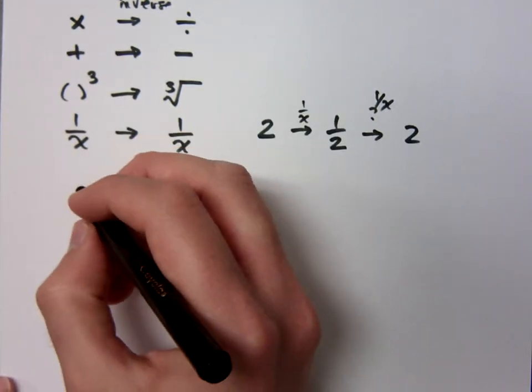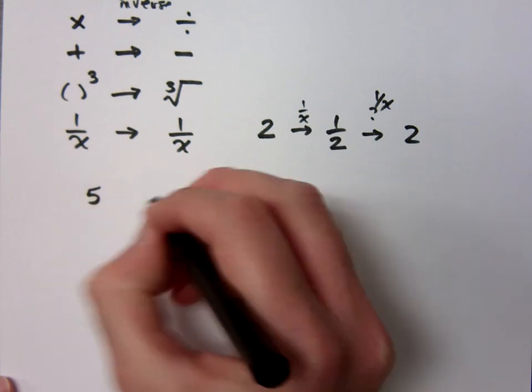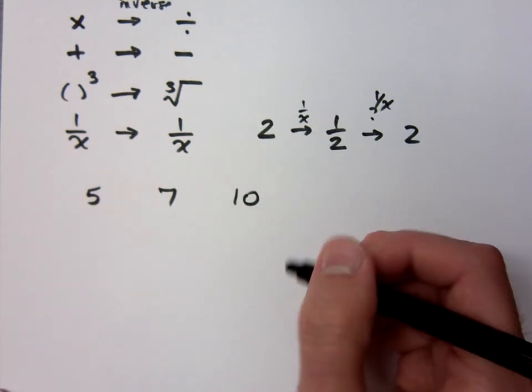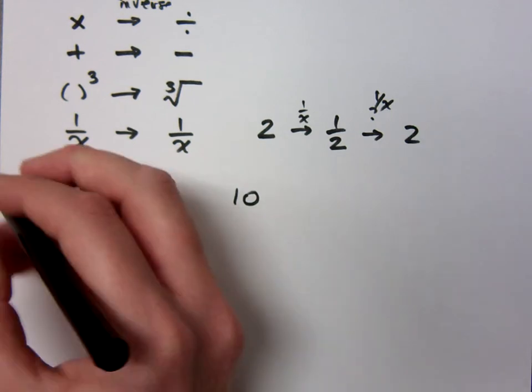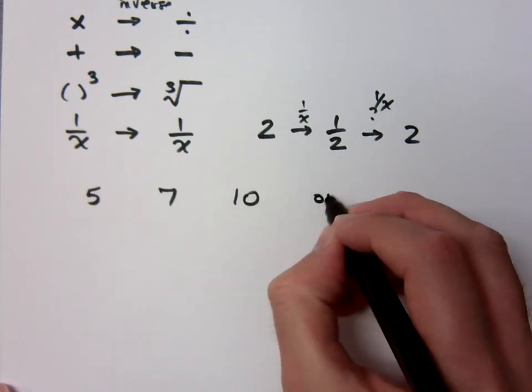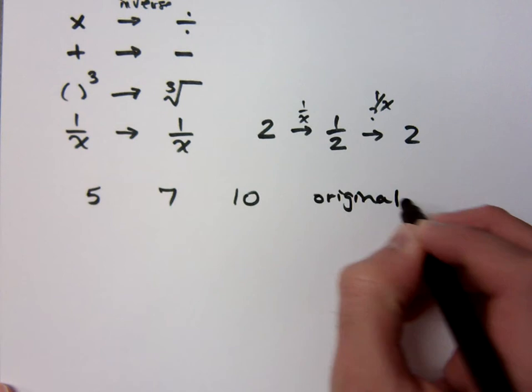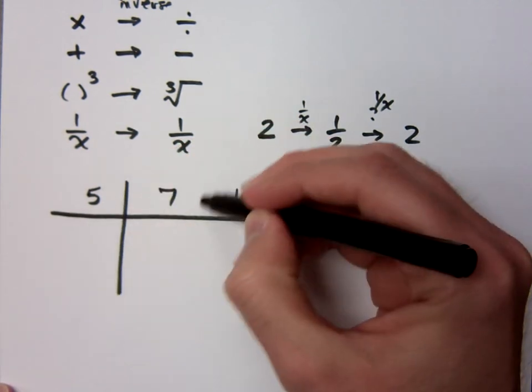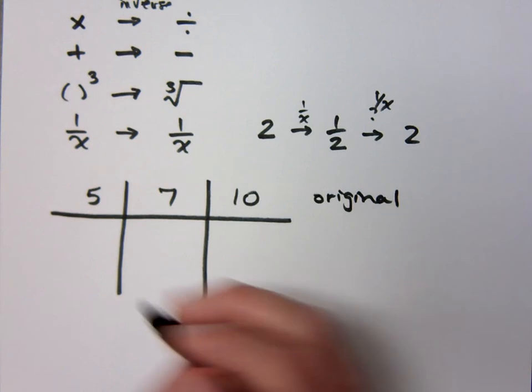I'm going to have some numbers here. I'm going to do 5, 7, 10. Bless you. Okay. Now, this is the original. Now, somebody's going to come along, and they're going to change these numbers. Which would be the inverse. No.